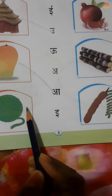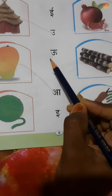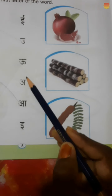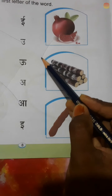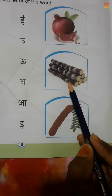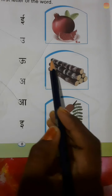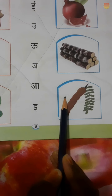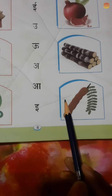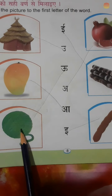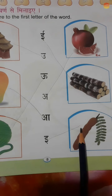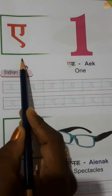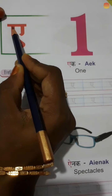Oon — first letter U. Anar — first letter A. Ek — first letter E. Good. Emily — E. Utej, Aam, Oon, Anar, Ek, and Emily. Finish the homework.